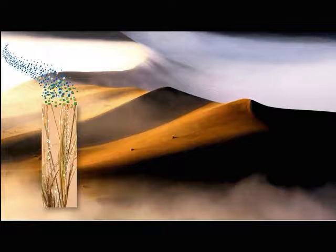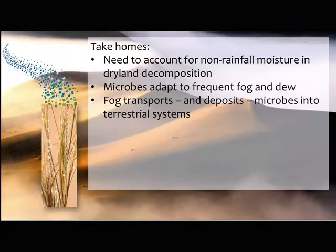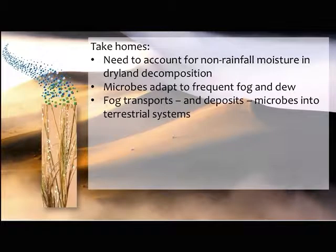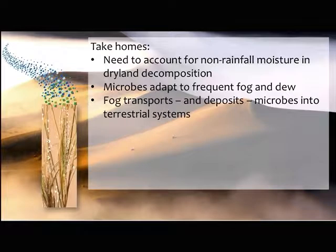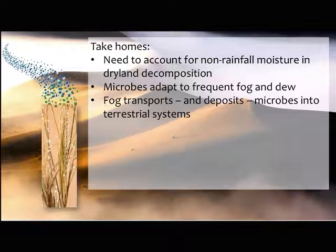I hope I've managed to engage your curiosity in the Namib Desert and the major issues we're grappling with in microbial ecology. The take-home messages so far: there's a really big need to account for non-rainfall moisture in dryland decomposition — my collaborator Kathy Todd Brown has really run with this in desert ecosystem models. We also found that there are fog-basking microbes — microbes do adapt to frequent fog and seem to form different traits in that region. And fog transports and deposits microbes into terrestrial systems, which is a new finding.